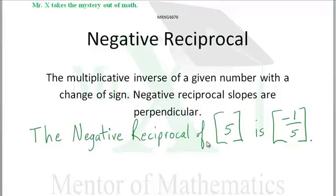The negative reciprocal of 5 is negative 1 fifth. The negative reciprocal of 22 is negative 1 over 22. The negative reciprocal of 125 is negative 1 over 125.